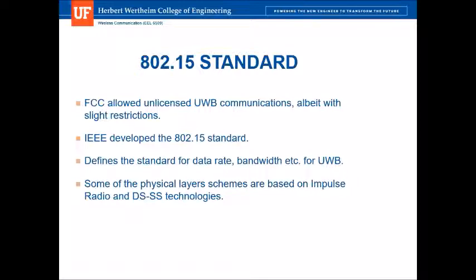After the introduction of the technology, IEEE quickly developed a standard for this in the 802.15 standard. It all started with the FCC allowing unlicensed ultrawideband communications with only slight restrictions on energy and bandwidth. IEEE then developed the 802.15 standard to define standards for bandwidth, data rate, and so on for ultrawideband communication. The physical layer and data link layer application standards are discussed in IEEE 802.15, and some physical layer schemes are based on impulse radio and digital spread spectrum technologies.